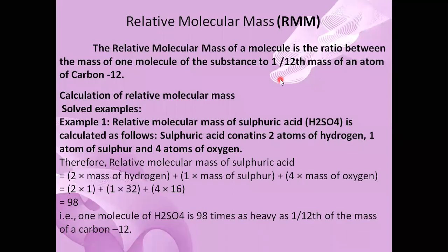Next, we discuss relative molecular mass. The definition of relative molecular mass is: the relative molecular mass of a molecule is the ratio between the mass of one molecule of the substance to one-twelfth the mass of an atom of carbon-12. This is simplified as RMM — R means relative, M means molecular, M means mass.